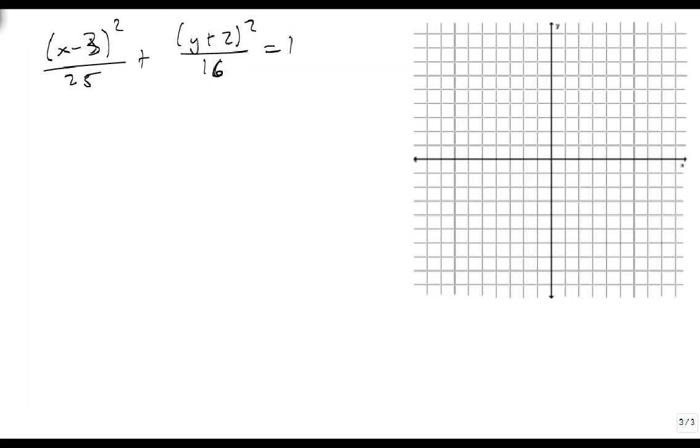So let's look at an example. Suppose we have x minus 3 squared over 25 plus y plus 2 squared over 16 equals 1. Well that means h, coming from here, h is 3, and k is negative 2. So our center is at 3, negative 2.